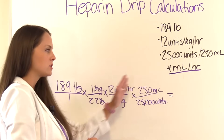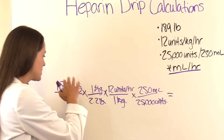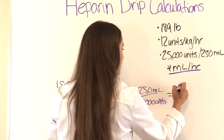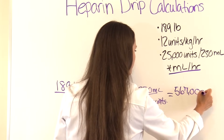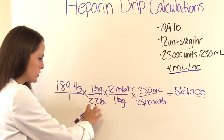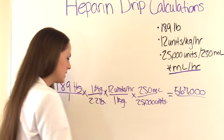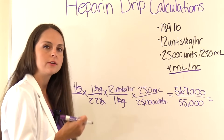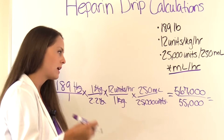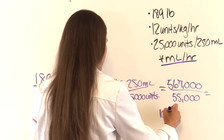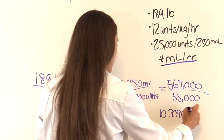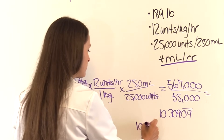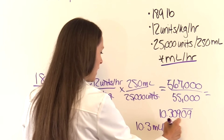We multiply everything on top, everything on the bottom, then divide. So 189 × 1 × 12 × 250 equals 567,000. And 2.2 × 1 × 1 × 25,000 equals 55,000. Dividing 567,000 by 55,000 gives 10.3090 repeating, and rounding to the nearest tenth, our answer is 10.3 milliliters per hour.